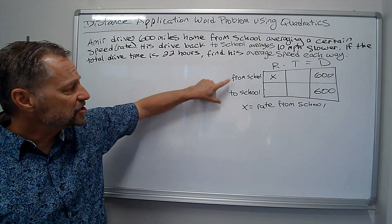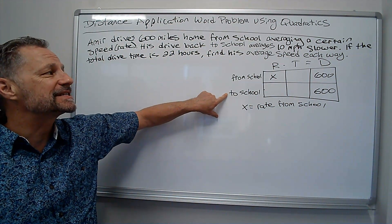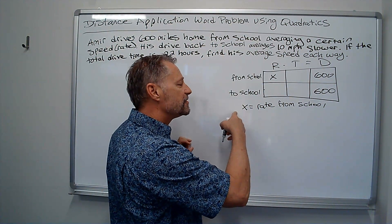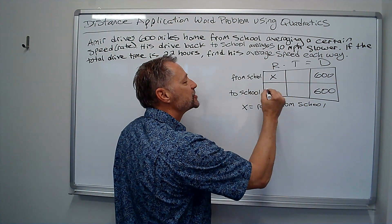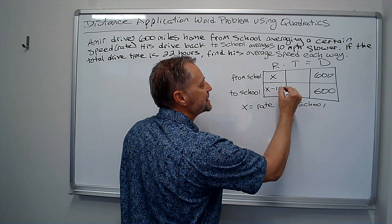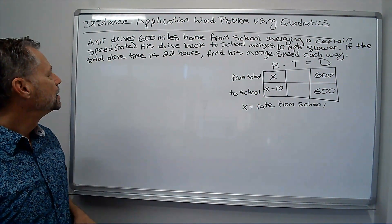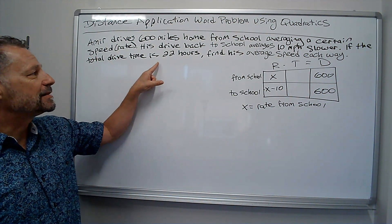His drive back to school, so to school, averages 10 miles per hour slower. Well, if X was his rate from school, and now he's slower, that's X minus 10.